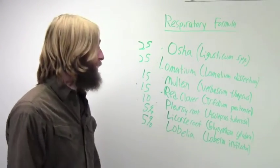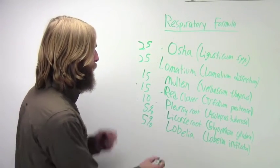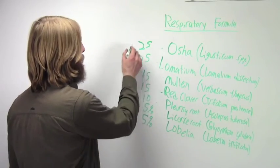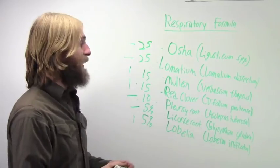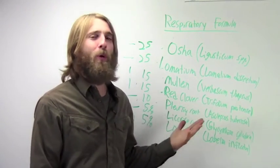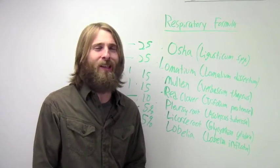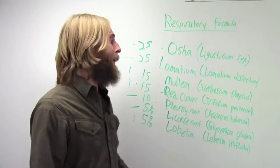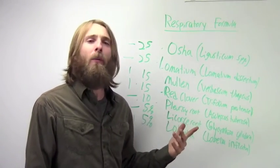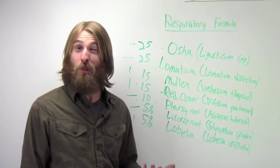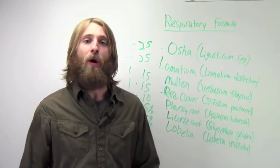Pleurisy and Lobelia also relaxing the bronchioles. Ultimately I would do this formula as a tincture primarily because it would taste pretty horrible as a tea, but you also see that you've got one, two, three, four roots and then one, two, three leaves or flowers. So in order to prepare this as a tea you'd have to do part of it decoction, part of it infusion. Most people just aren't able to do that.